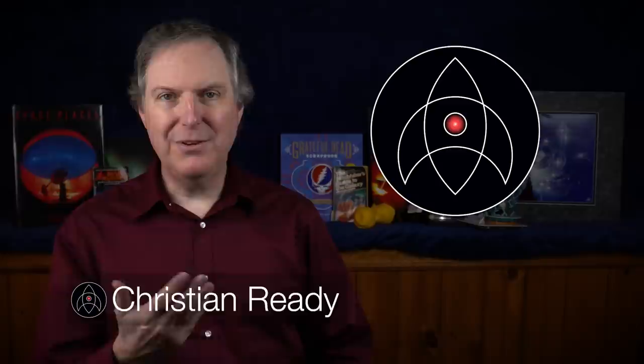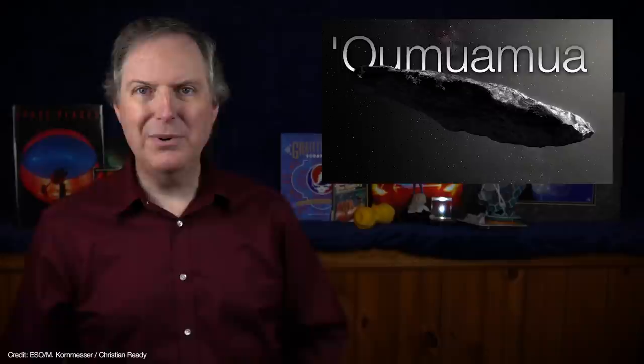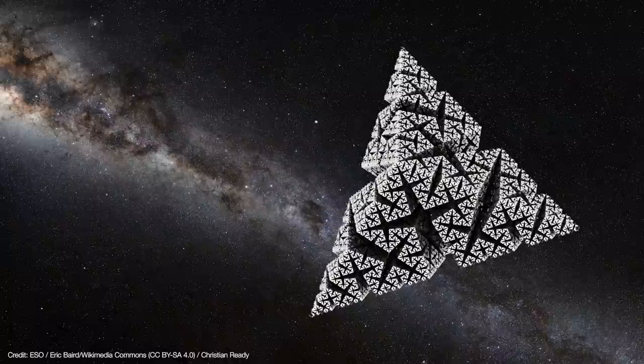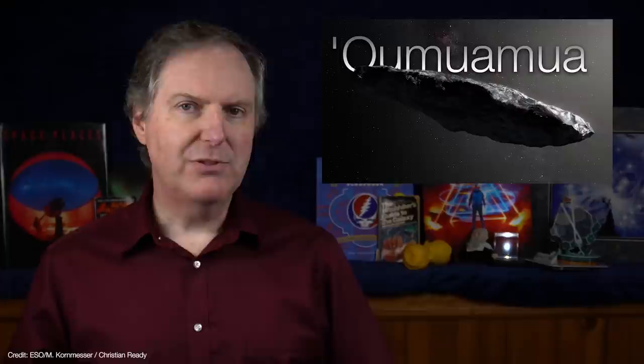In 2017, Oumuamua became the first observed interstellar object to pass through our solar system. That alone would have made it one for the books, but it didn't behave like anything we'd seen before. Several ideas were put forward to explain its origin, including as a chunk of hydrogen ice, a giant fractal snowflake, and even a discarded light sail. But none of these satisfactorily explained Oumuamua's origin.